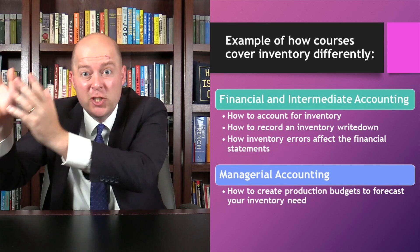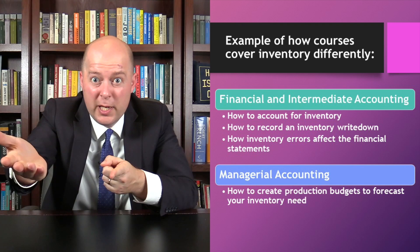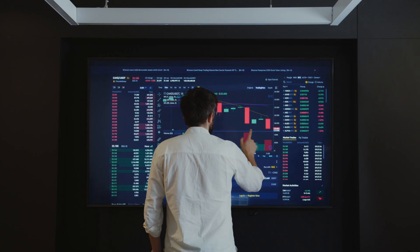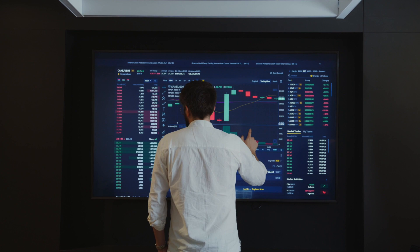In managerial accounting, on the other hand, you'd learn how to make production budgets to forecast your inventory need, how to determine the amount of inventory that needs to be sold in order to break even, and when to reorder inventory. So managerial accounting is about helping the company's managers make better decisions, while financial accounting and intermediate accounting are about producing financial statements for people outside the company, like investors and creditors.